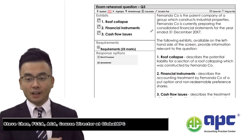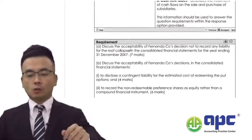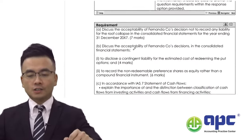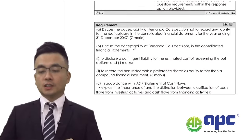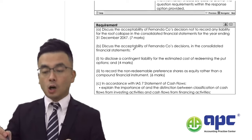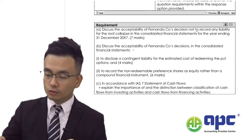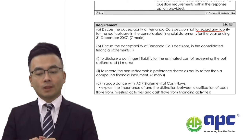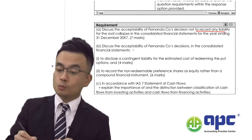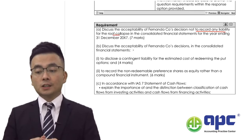Welcome. Now, for another company, 25-marker question, starting with requirement A: discuss the acceptability of a company's decision not to record any liabilities for the roof collapse, which means the company is being sued, perhaps, in the consolidated financial statements.